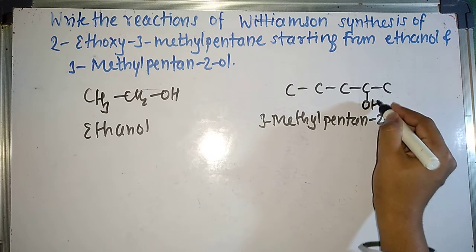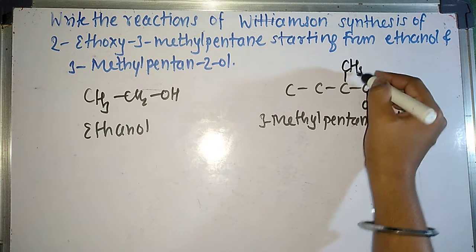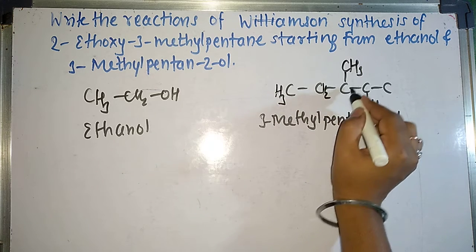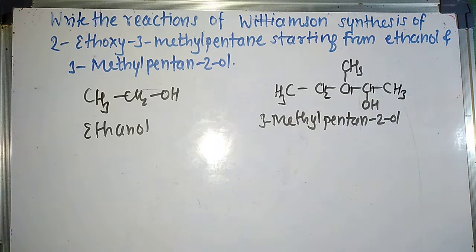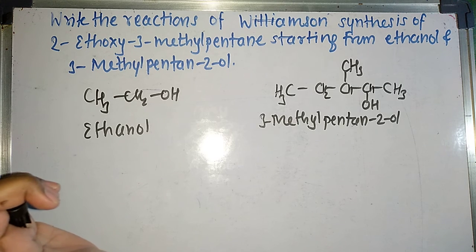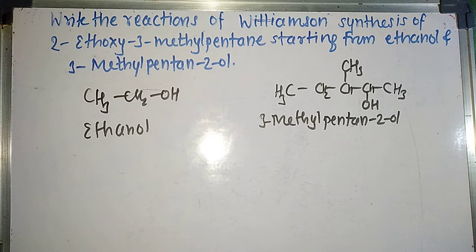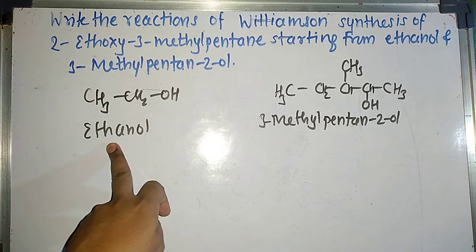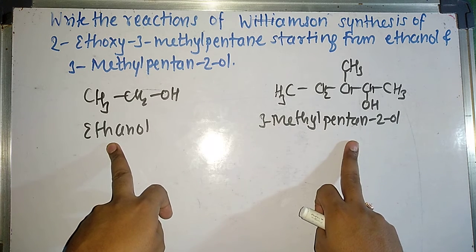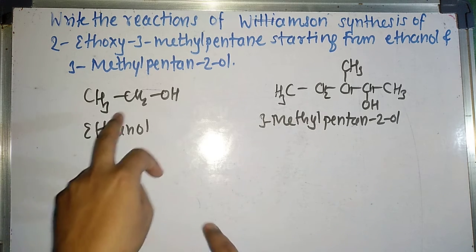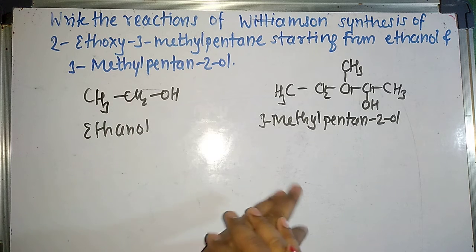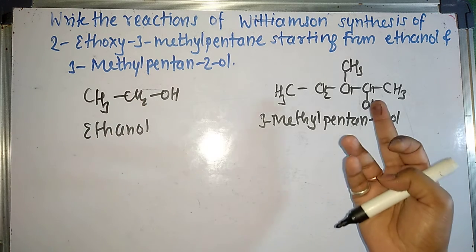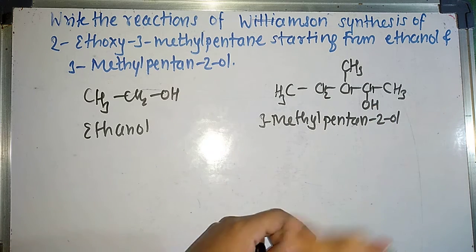2-ol means at second position I am having alcoholic group. At 3 position I am having methyl. Remaining are hydrogen: CH3-CH2-CH(CH3)-CH(OH)-CH3. Now first question is Williamson synthesis is used for preparation of ethers, starting compounds are alkoxide and alkyl halide. So which molecule will be considered as alkoxide? Which molecule will be considered as alkyl halide? Remember whenever we are having primary alkyl group, for primary alkyl group take as alkyl halide. For secondary or tertiary alkyl group, take as alkoxide.